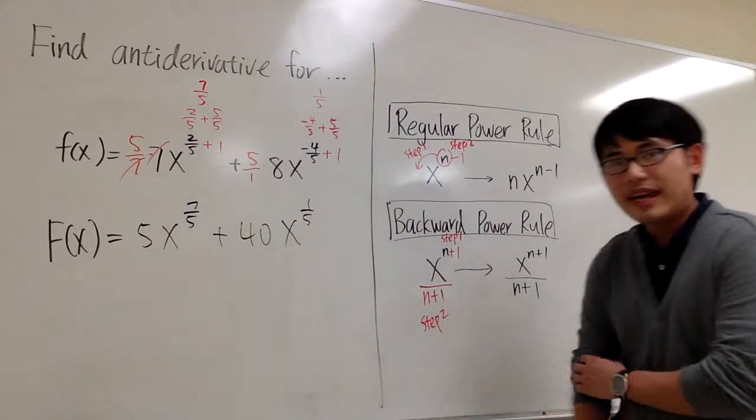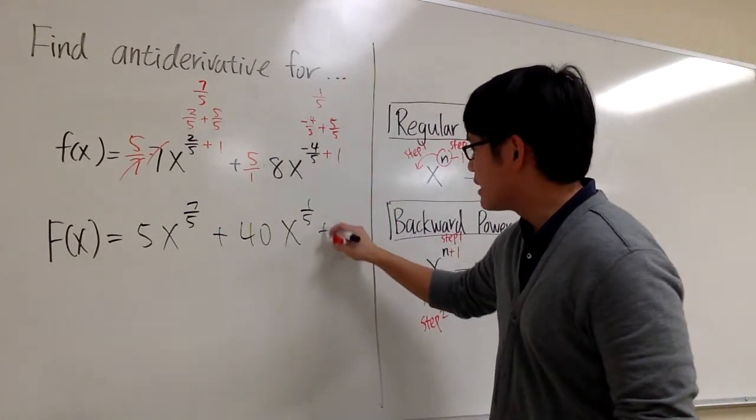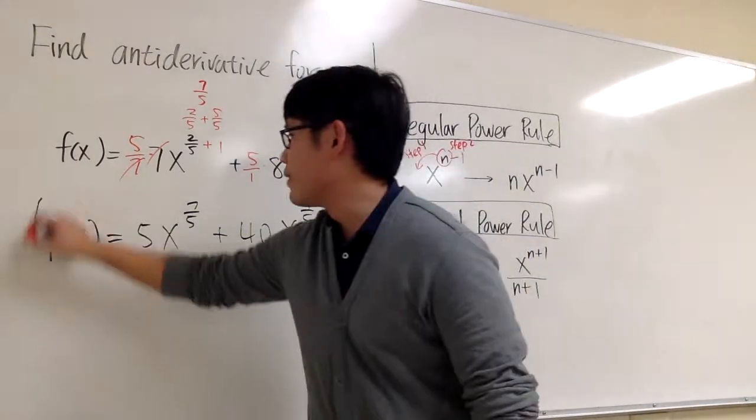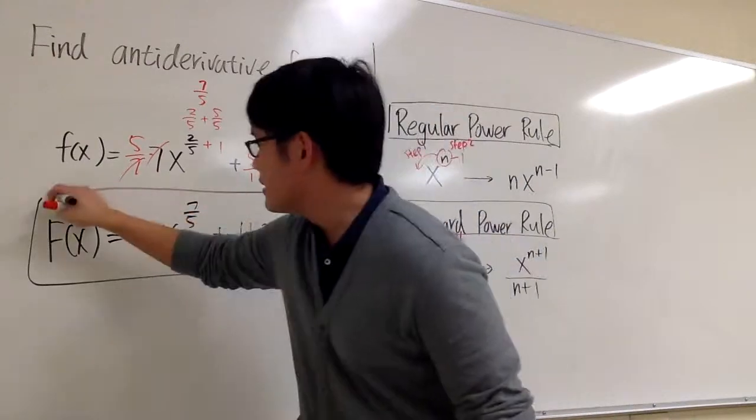And when you're doing the anti-derivative from here to here, we just add a plus C at the end for a constant. That's it.